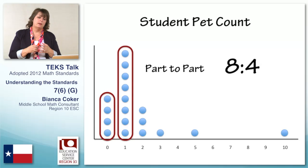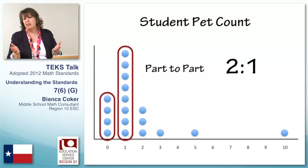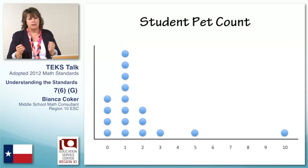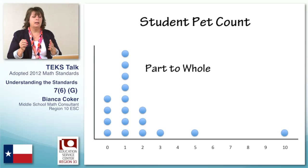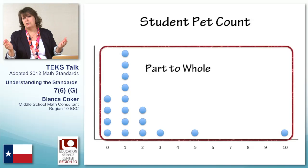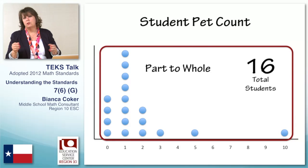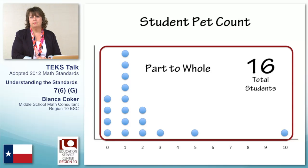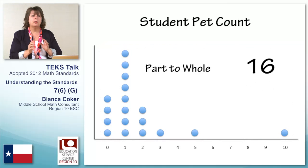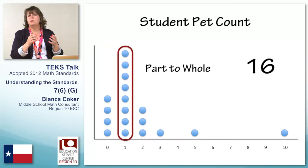If we want to do a part-to-whole comparison, then we need to know that there are 16 students in the class. We can find that out by either counting up our data from the last slide or counting up our dots. And if there are 16 students in the class, then a part-to-whole comparison might be: eight students have one pet out of the 16 students in the class, so one half of the students have one pet. Do you see our part-to-part and part-to-whole comparisons we pulled out of this graph?